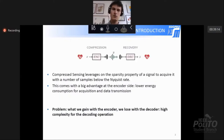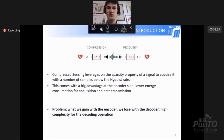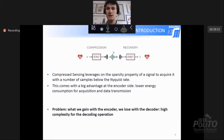Compressed sensing is a technique that allows us to sample a signal with a rate which is below the Nyquist rate. This is possible only for signals which are sparse. Typical sparse signals are biosignals such as ECG and EEGs. This is good because we can achieve lower energies at the encoding side of our architecture. In fact, we have less samples to be acquired and less samples to be transmitted. But this comes with a drawback at the decoding side, as the decoding of these compressed signals is computationally heavy.